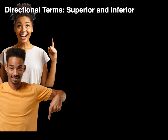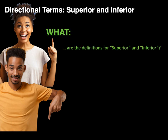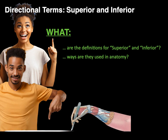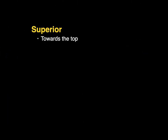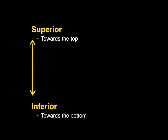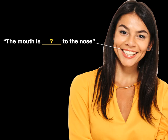Let's talk about the directional terms superior and inferior and answer the questions: what are the definitions for superior and inferior, and what ways are they used in anatomy? My name is Dr. Morton and I'm the noted anatomist. The word superior means towards the top, and the word inferior means towards the bottom. Let's go through some examples of these two terms.